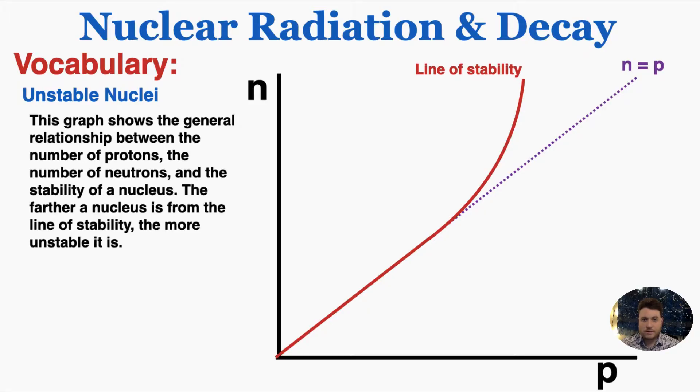After a certain number of protons, to remain stable, atoms actually have to have larger and larger amounts of neutrons compared to protons. That's what that upward curve of the graph represents. Beyond a certain number of protons, you need a greater number of neutrons than protons to have a stable nucleus. The farther a nucleus is from this line of stability, the less stable it is.